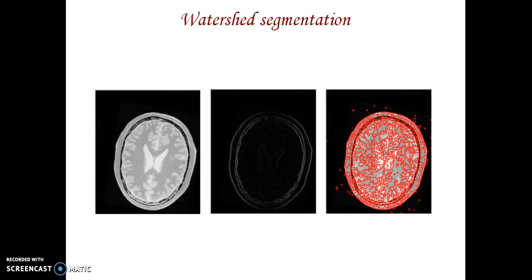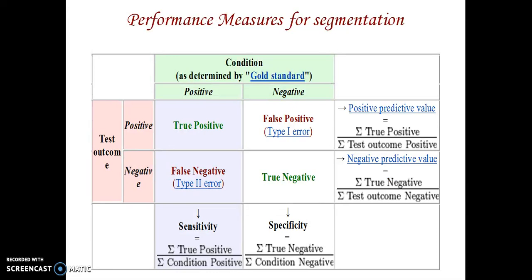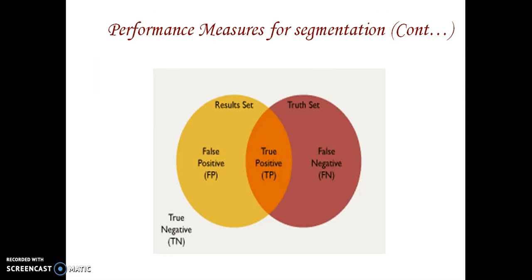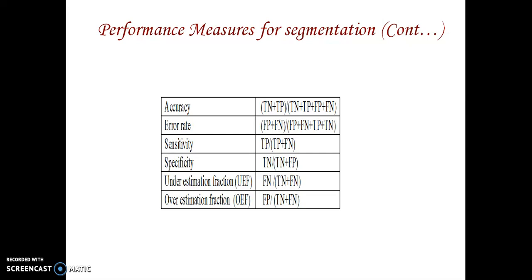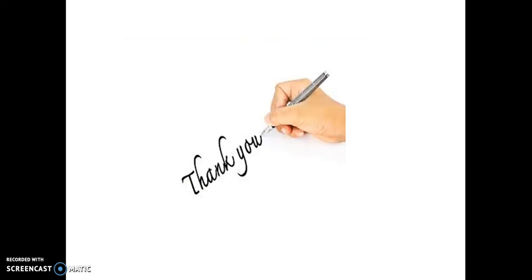These are the watershed segmentation results. For performance measures: if the ground truth is positive and test result is positive, it is true positive; if both are negative, it is true negative. We compute positive predictive value, negative predictive value, sensitivity, and specificity. These are formulas for accuracy, error rate, and overestimation factors. That is all — thank you.